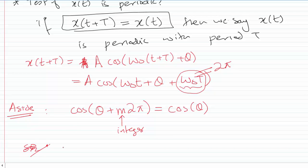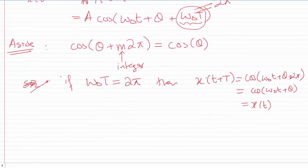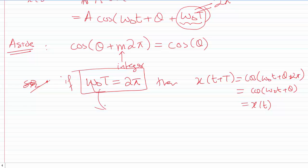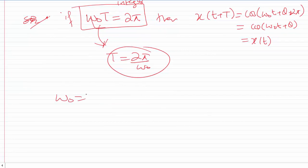The condition we need is ω₀T = 2π, so x(t + T) = A·cos(ω₀t + θ + 2π) = A·cos(ω₀t + θ) = x(t). From this condition, we can solve for the period: T = 2π / ω₀. As long as T = 2π / ω₀, we have x(t + T) = x(t), and we can say our signal is periodic.